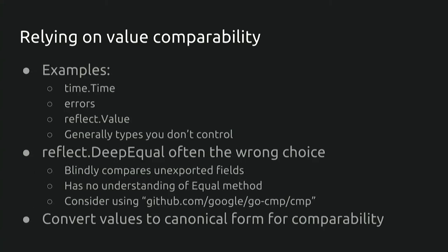You have just seen two examples where relying on value comparability resulted in buggy code. For tests, reflect.DeepEqual is often the wrong choice because it blindly compares on the internal details of types and has no understanding of Equal methods that package authors may have wanted you to use. To deal with brittle tests inside Google, we have open-sourced a package on GitHub called 'cmp' that avoids these pitfalls. Generally in Go code, you should be careful about whether types are comparable, and if they are not, you should either use a custom definition of equality like the Equal method, or convert the value to a canonical form that is stable.